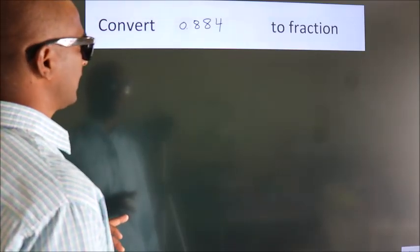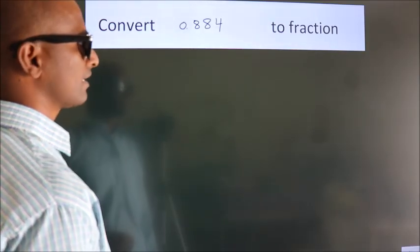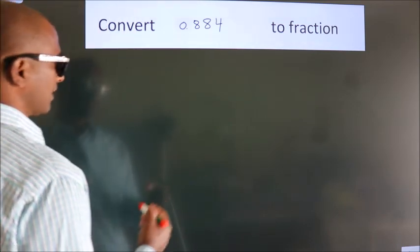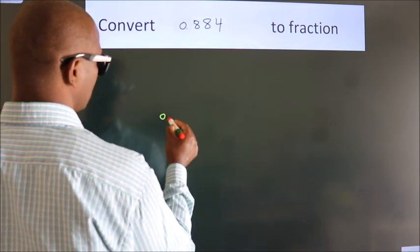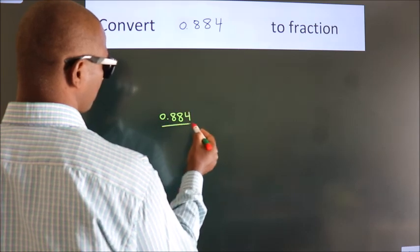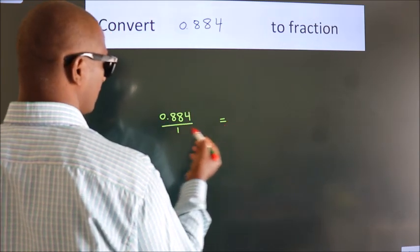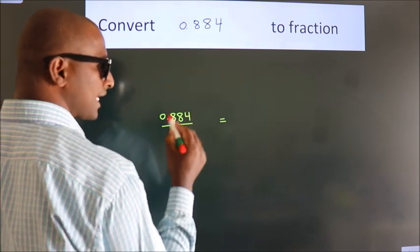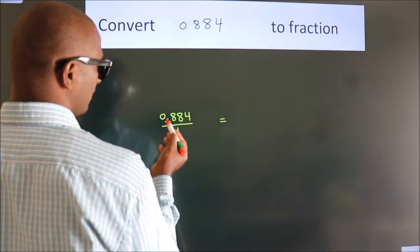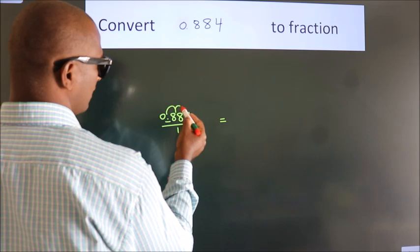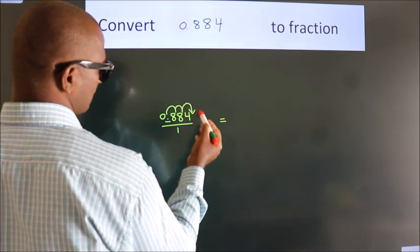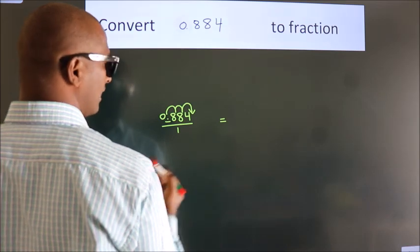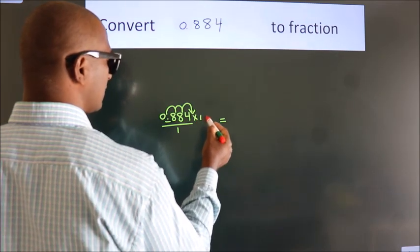Convert 0.884 to fraction. Given is 0.884. To convert this to fraction, we have to move this decimal after 1, 2, 3 numbers. To move this decimal after 3 numbers, we have to multiply it with 1000.